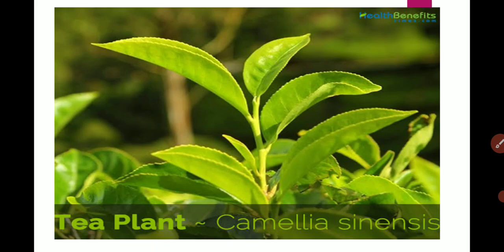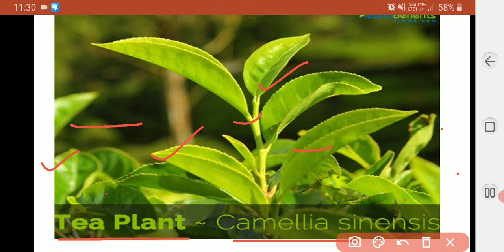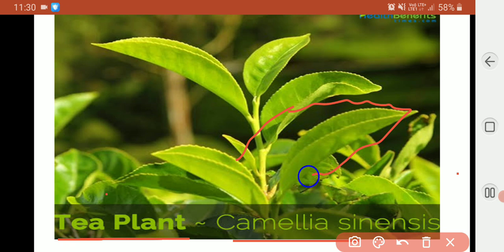You can see the arrangement of leaves in the plant — leaves are alternately arranged. One leaf is here, then the next one is here, so leaves are alternately arranged. If we talk about the margin, you can see this serrate type of margin — this is a serrate margin on the leaves.